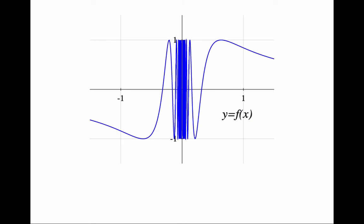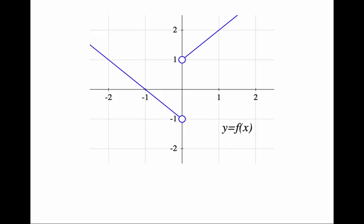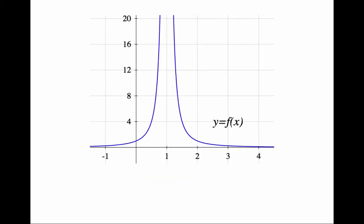Many of these examples of bad functions have one thing in common. They lack a limit. This function does not have a limit as x approaches 0. This function does not have a limit as x approaches 0. And this function does not have a limit as x approaches 1.